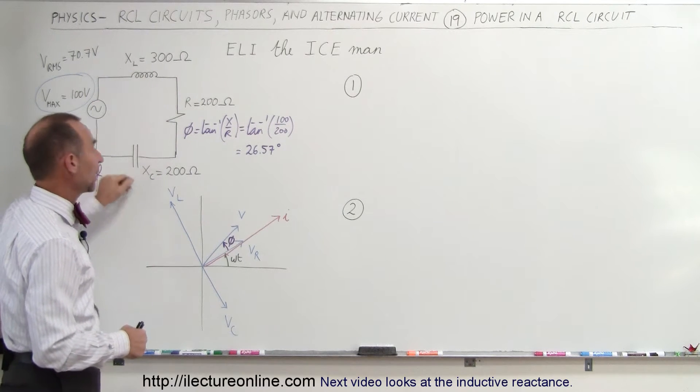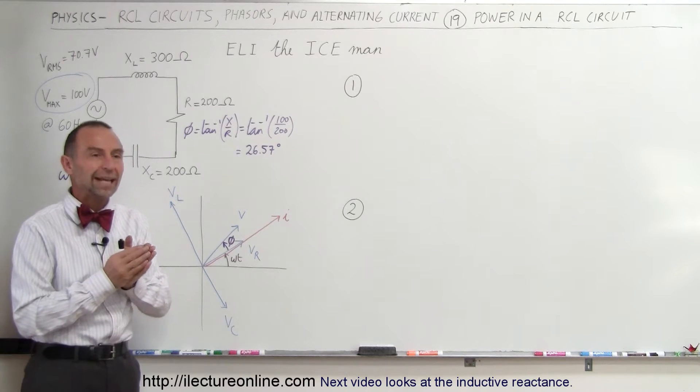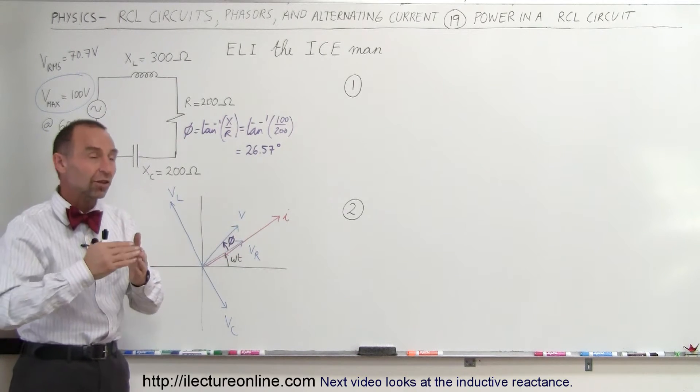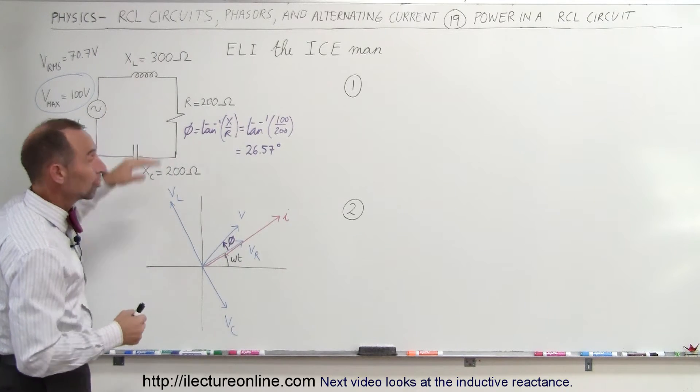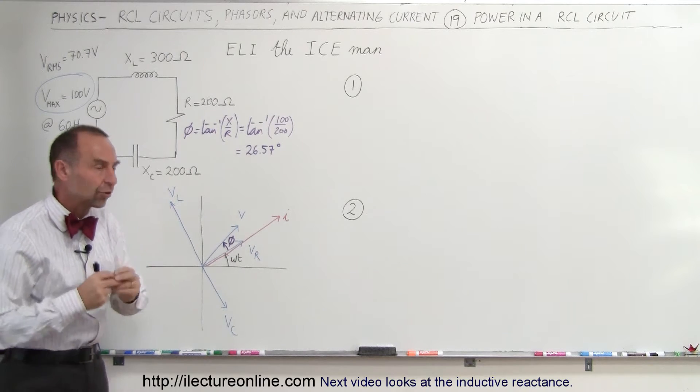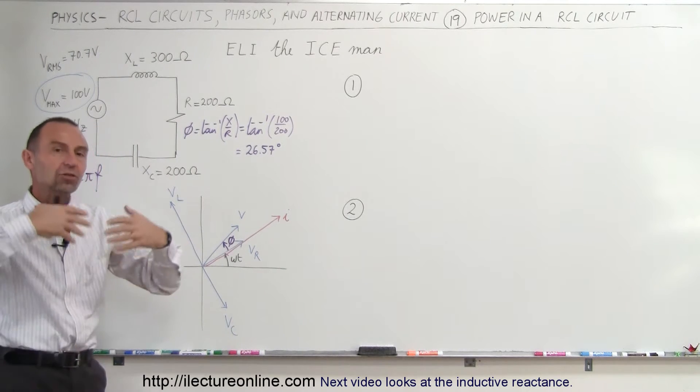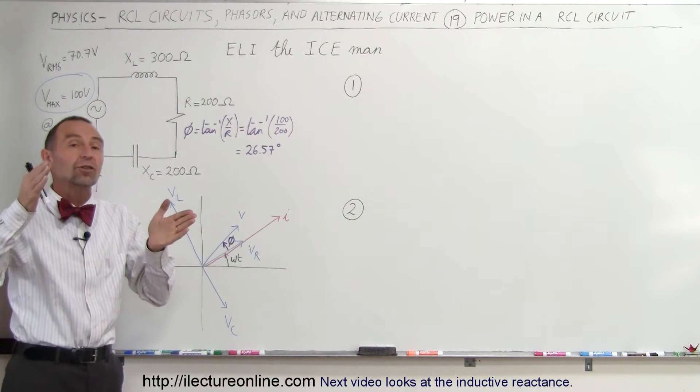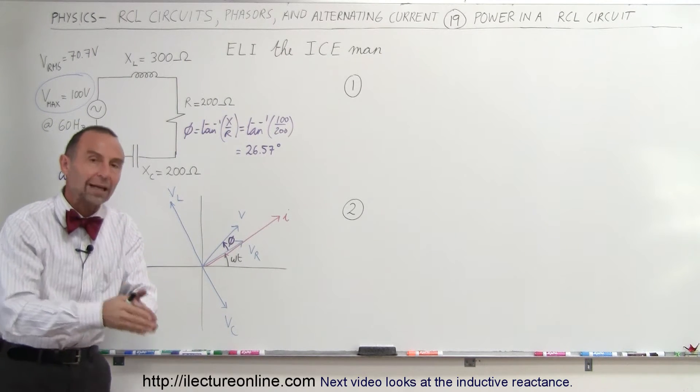The inductor and the capacitor are basically just pure energy savers. They store energy and then release energy. The inductor does that by building up a magnetic field, and that magnetic field collapses back into the circuit and releases back the energy that is stored. The capacitor does that by storing up charges on the capacitor, and then the charges go back into the circuit.